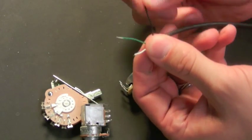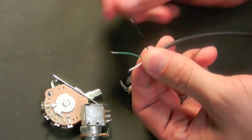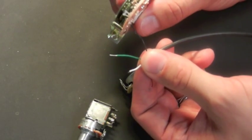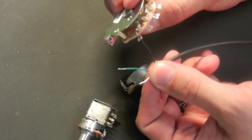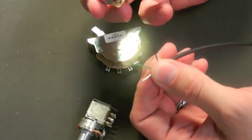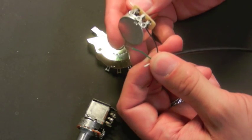The black is going to be your hot wire. That's going to go to either one of the lugs of your selector switch like so, or it may go to the lug of the volume pot depending on if you have an independent volume wiring.